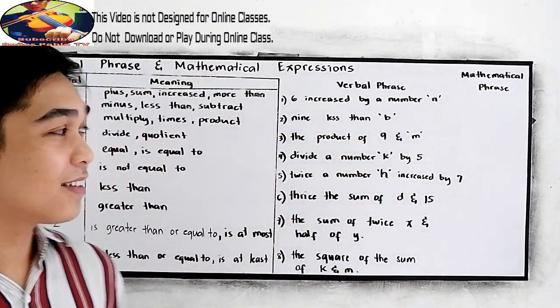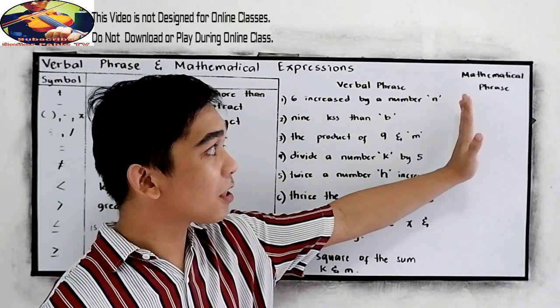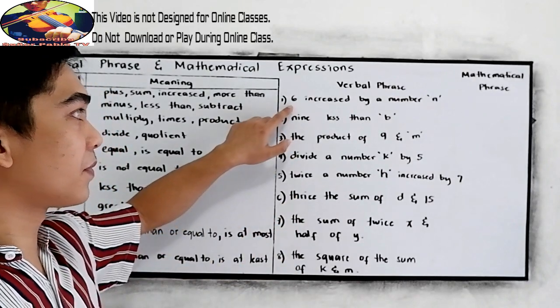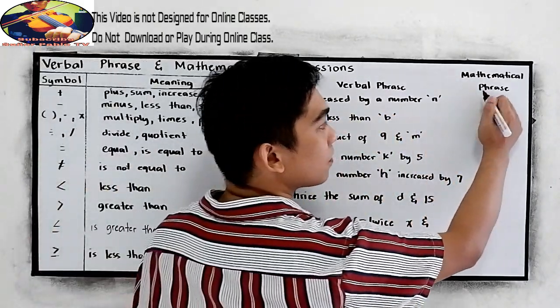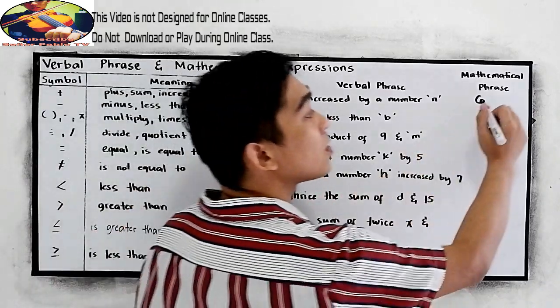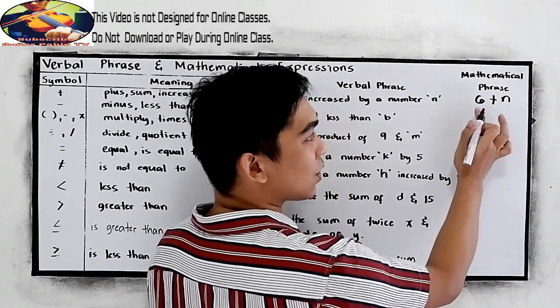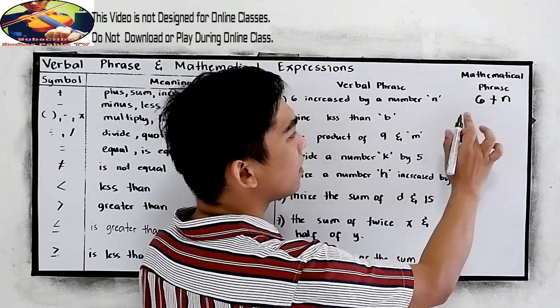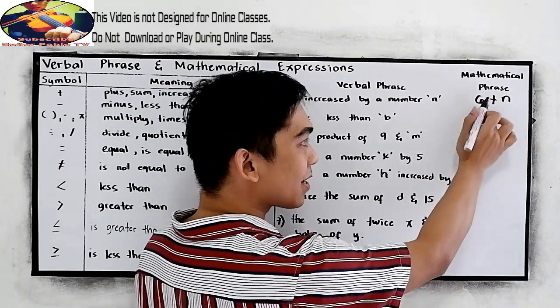Now, to better understand, let's have the following verbal phrases and we are going to write the mathematical phrase, the equivalent mathematical phrase. Number one, six increased by a number n. So, we have six increase. Where is increase? From our table, increased by a number n, by n. So, the mathematical phrase is 6 plus n. It can be six exceed by a number n, or it can be six plus a number n.